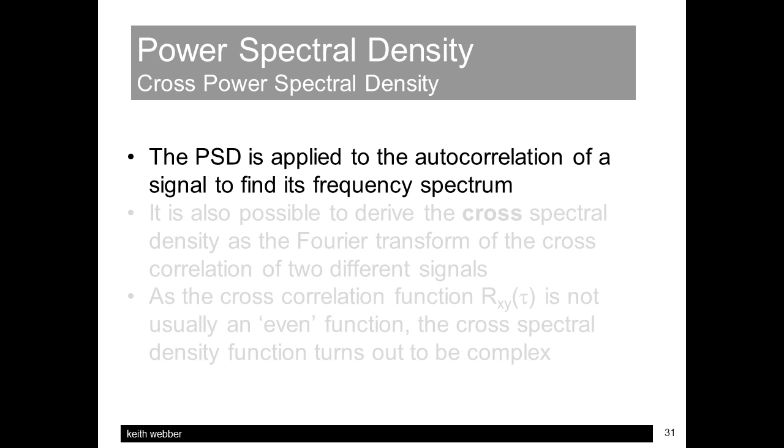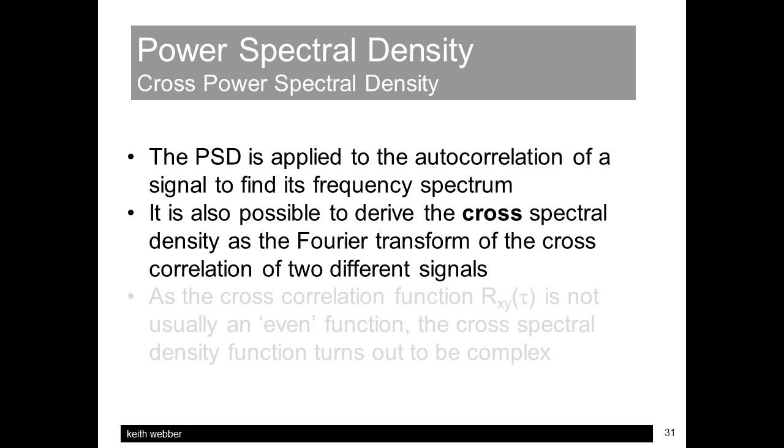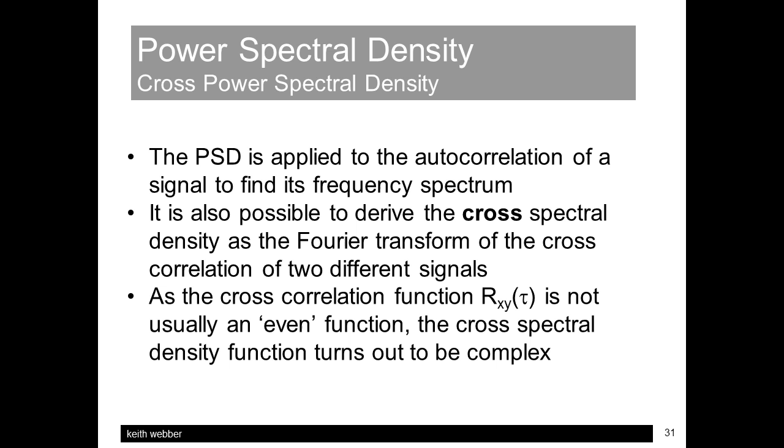In addition to the PSD, which provides the frequency spectrum of a single noise signal, it is also possible to form the cross power spectral density by taking the Fourier transform of the cross correlation function of two different signals. However, owing to the fact that the cross correlation function is not usually symmetrical, the cross PSD usually turns out to be complex.